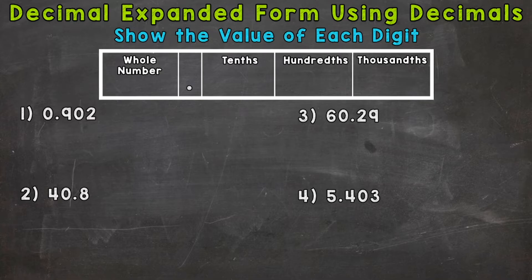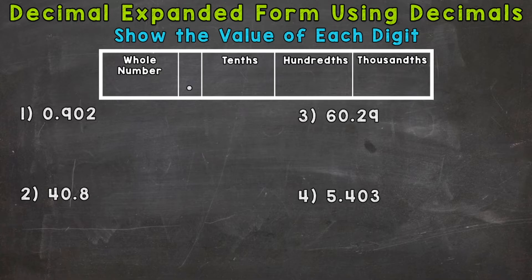When I talk about expanded form, that just means that we're going to expand each number out to show the value of each digit. So let's jump into number one, where we have 902 thousandths. There's a place value chart at the top of your screen, so I'm going to place that number in there. It's going to help us break the number down and really see what the value of each digit is. We go from left to right — the furthest digit to the left is the greatest valued digit, so that's always where you start with expanded form.